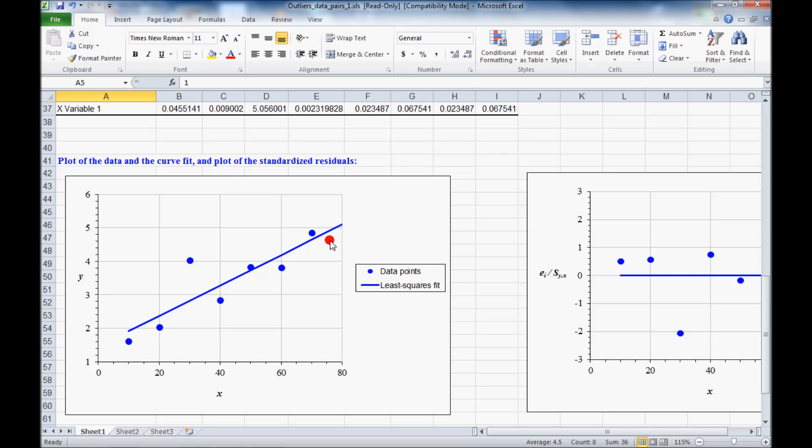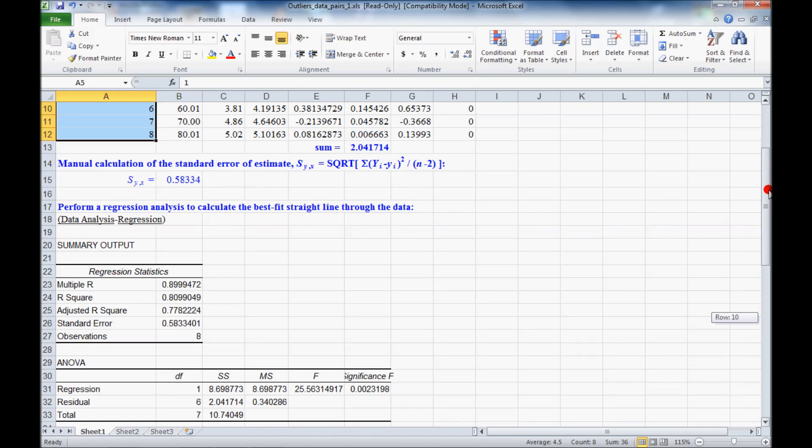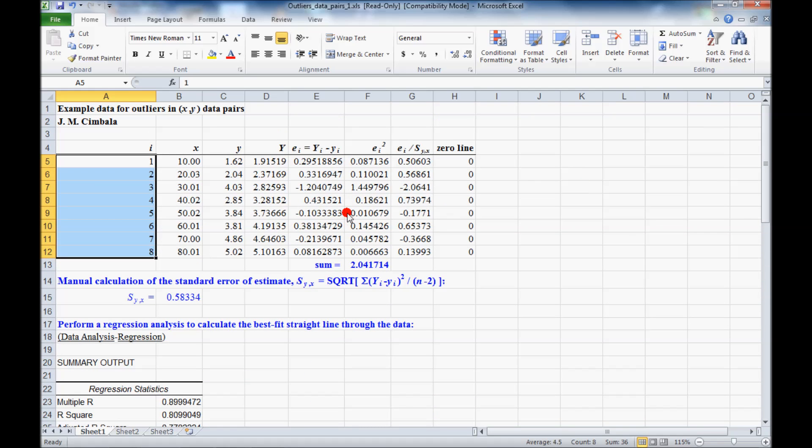We fit a straight line through it, actually a least squares fit. And we might suspect this point here, it doesn't seem to fit with the rest of them. So we ask, is this data point an official outlier or not? We'd like to get rid of it if it is. So here's the procedure for doing that.